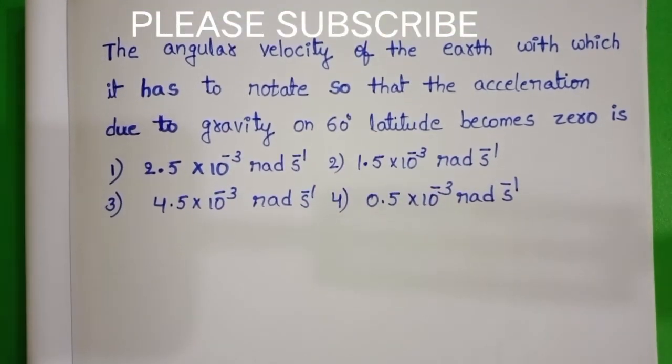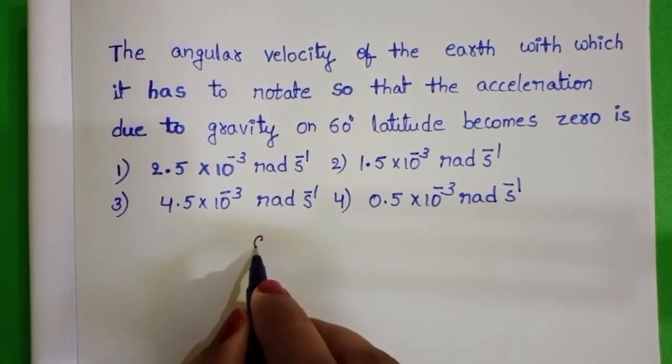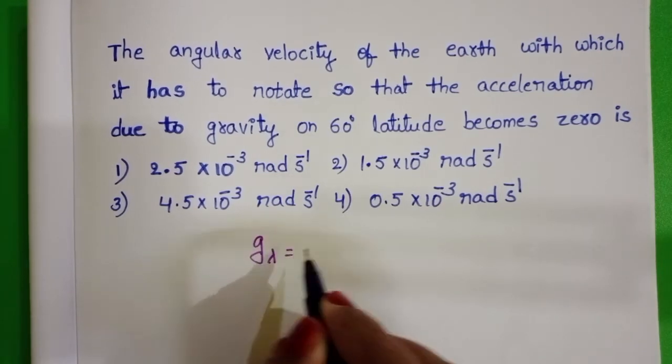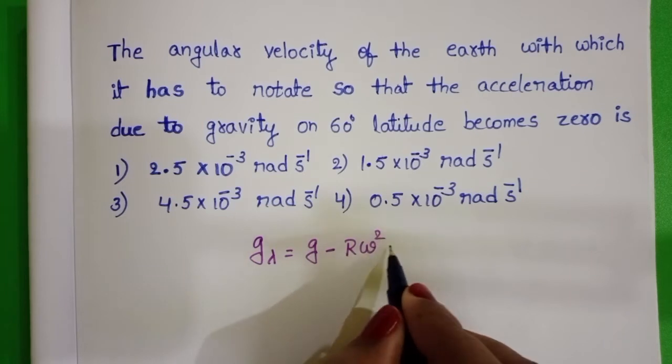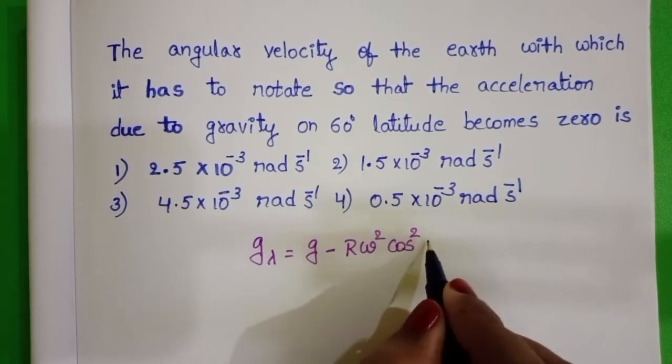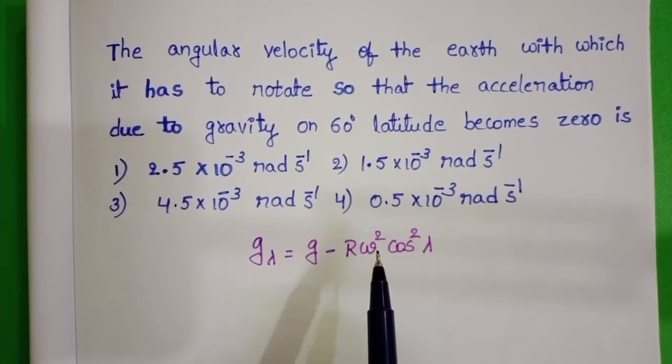To find out the acceleration due to gravity at the given latitude, the formula is g lambda equals to g minus r omega square cos square lambda, where lambda is latitude angle and omega is the angular velocity of the earth.